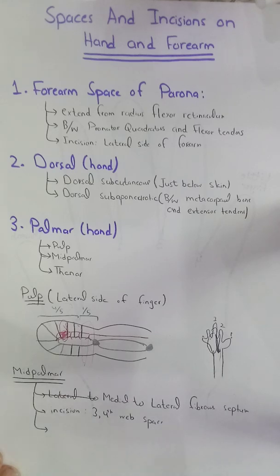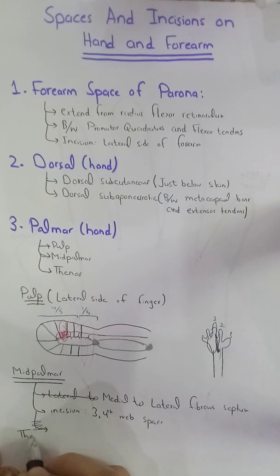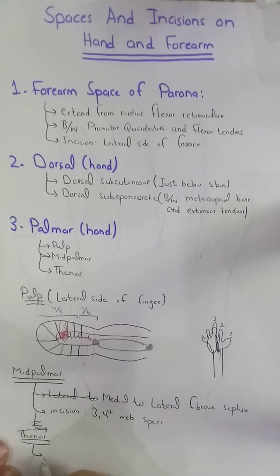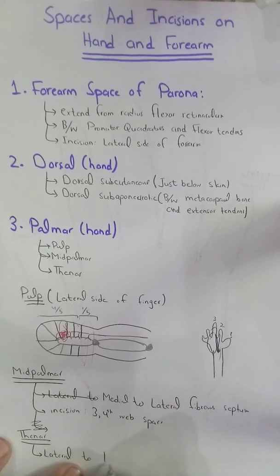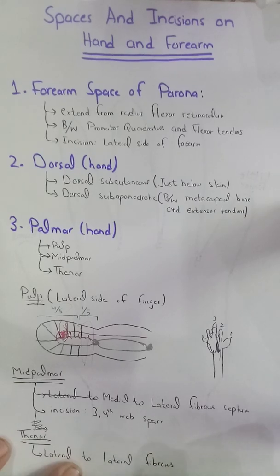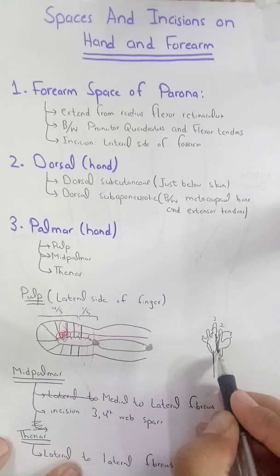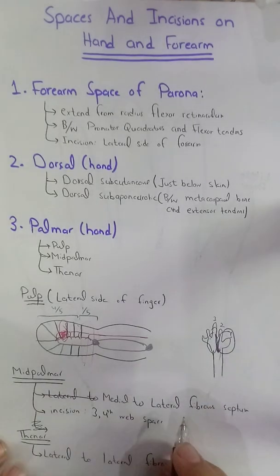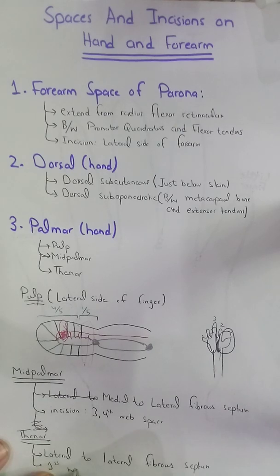The third palmar space is the thenar space. The thenar space is lateral to the lateral fibrous septum, and the incision for it will be in the first web space.